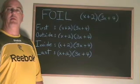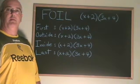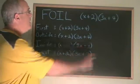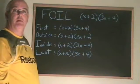The FOIL is a trick we use when we are multiplying two binomials. In this example we have x plus 2 times 3x plus 4.